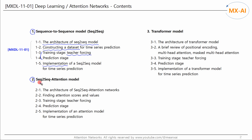In Chapter 2, let's upgrade the existing sequence-to-sequence model by adding the attention feature. We will look at the structure of the sequence-to-sequence attention network and how to find the attention scores and attention values. We will walk through the training and prediction processes and implement an attention model for time series forecasting.